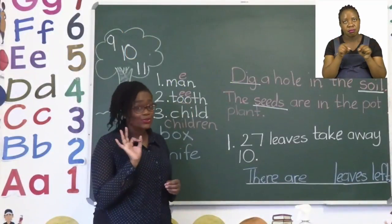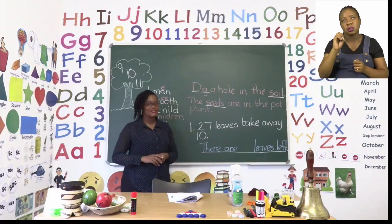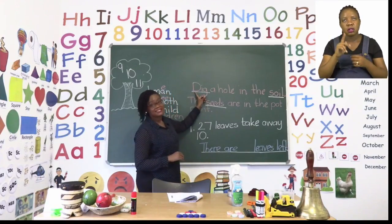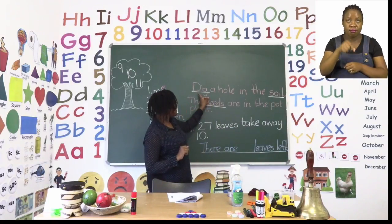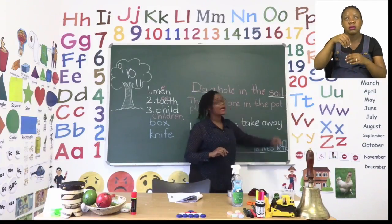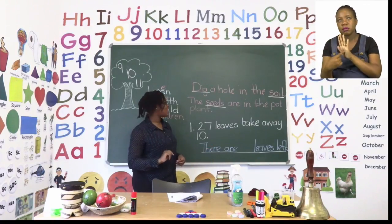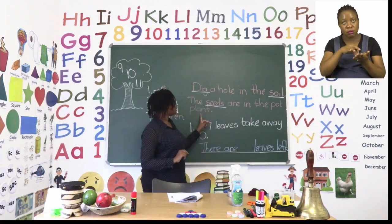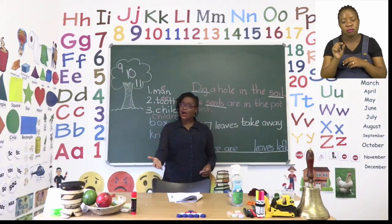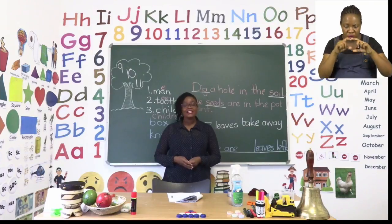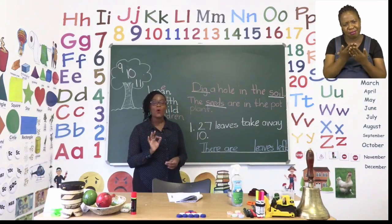We have six pictures each showing different stages of plants growing. On the board I have decided to use three words — dig, soil and seeds — and I'm describing what I can see in the pictures. The first sentence is: dig a hole in the soil. I used the words dig and soil. Don't forget your full stop and capital letter. The next sentence is: the seeds are in the pot plant. So take your time, say your sentence out loud, and use the words in the word box. Make sure you describe all six pictures.